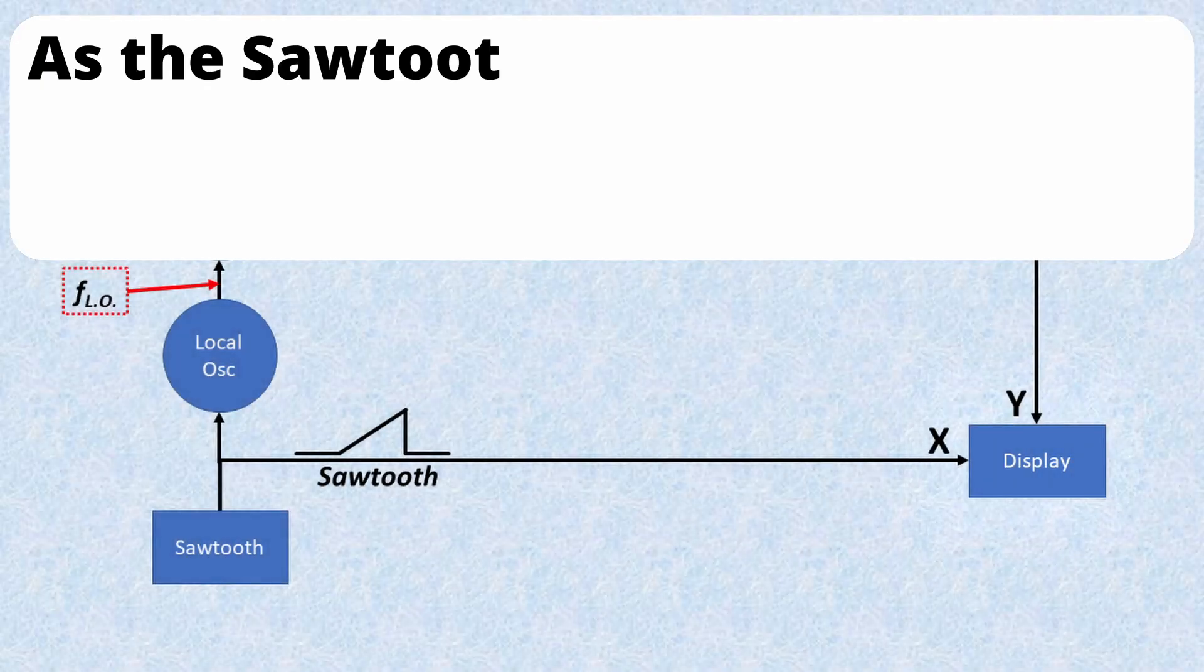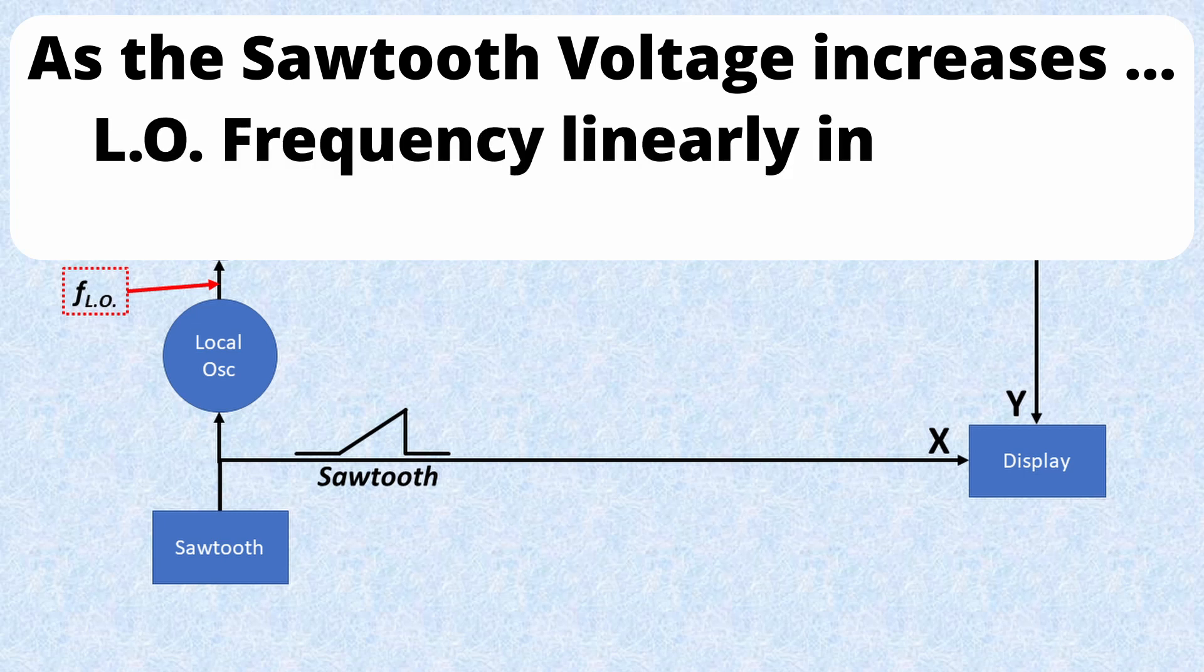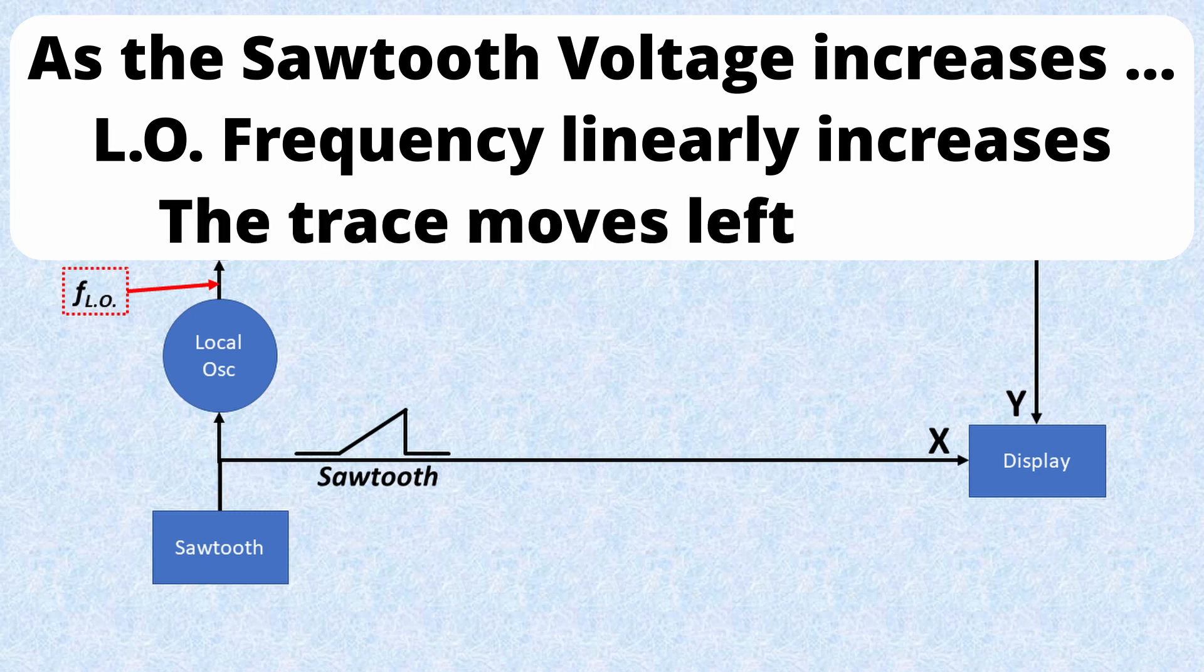As the sawtooth signal voltage increases, the frequency of the local oscillator also linearly increases. Meanwhile, at the display, the trace is moving from left to right on the screen. As the trace moves across the screen, the frequency increases and the vertical deflection represents the amplitude of the signal.